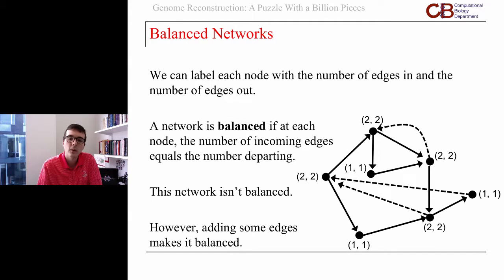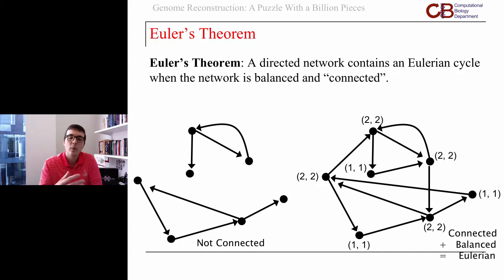What Euler showed, essentially, or what we would say is Euler's theorem, is that a directed network is going to contain an Eulerian cycle precisely when that network is balanced. At each node, the number in is equal to the number out, as well as connected.